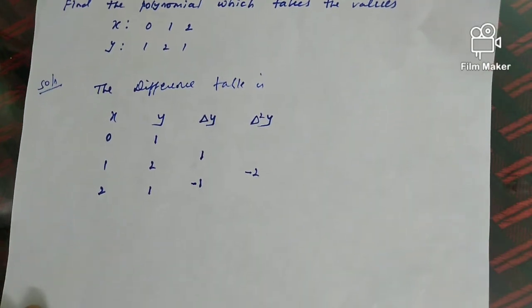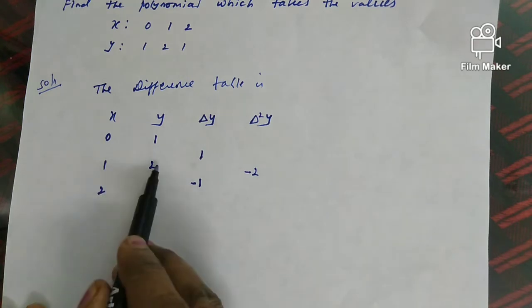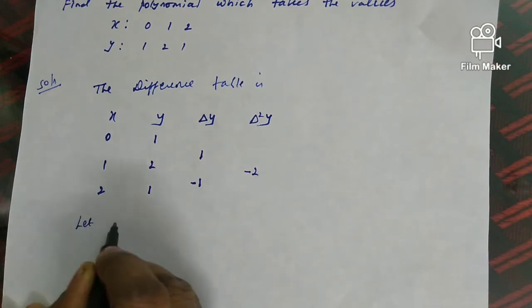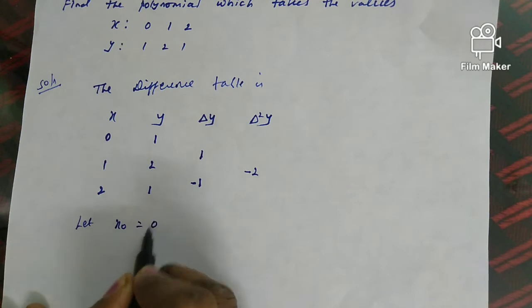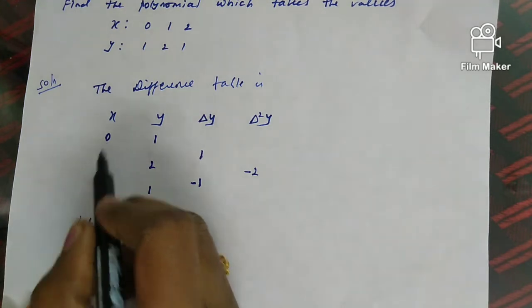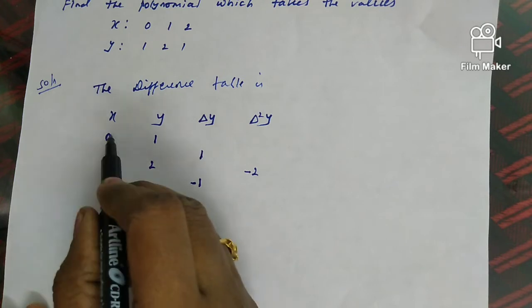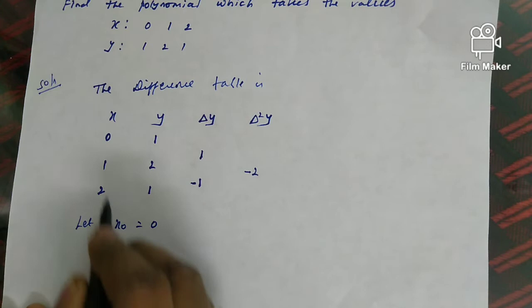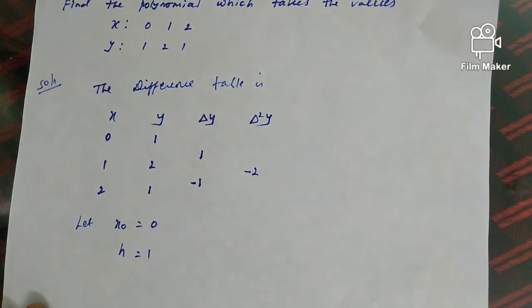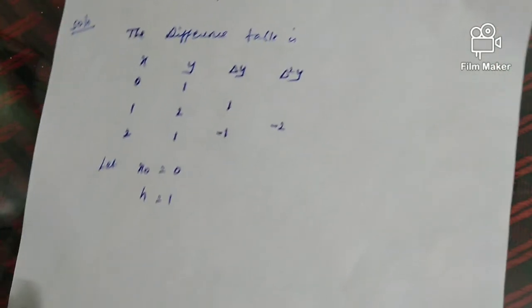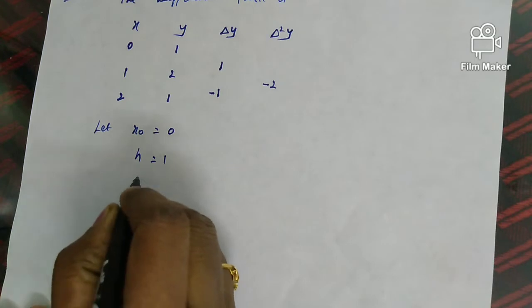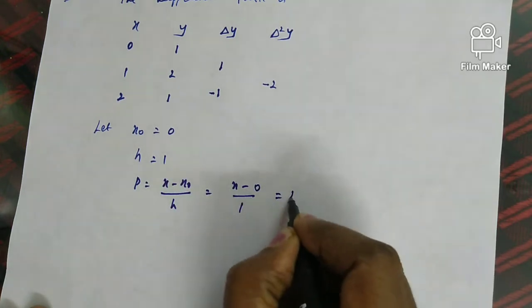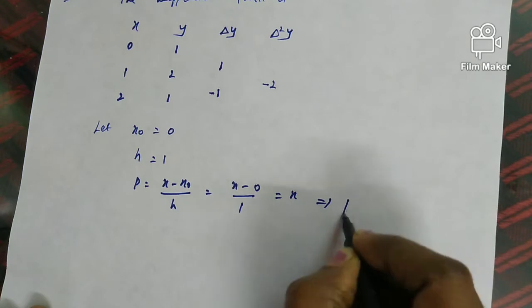The first value of x, x naught, is 0. The interval h is the difference between consecutive x values: 2 − 1 = 1, or 1 − 0 = 1, so h = 1. Note this formula is only for equal intervals. Now we find p: p = (x − x naught)/h = (x − 0)/1, so p = x.